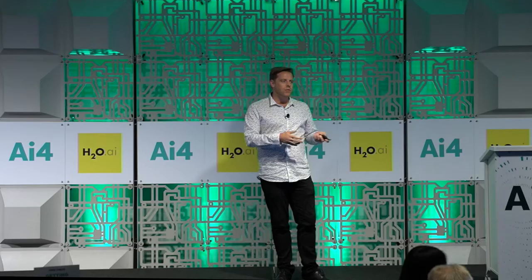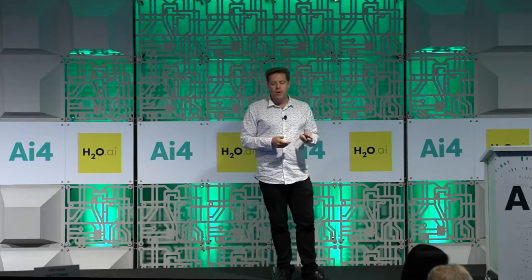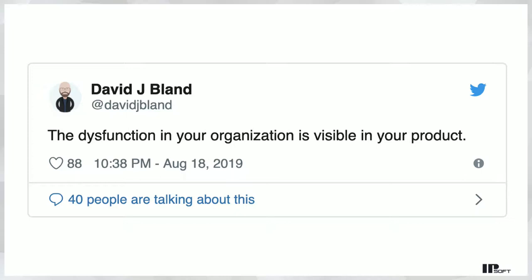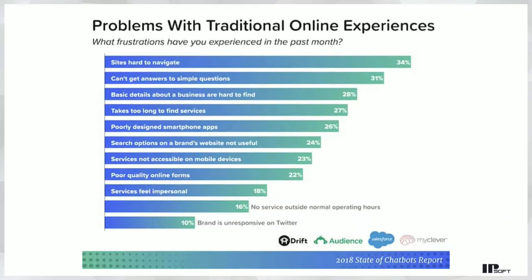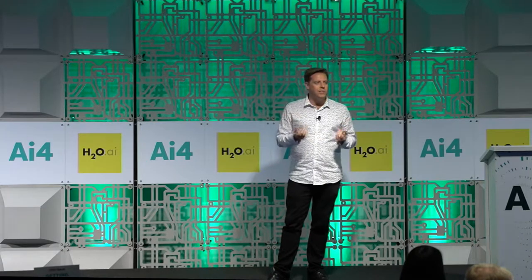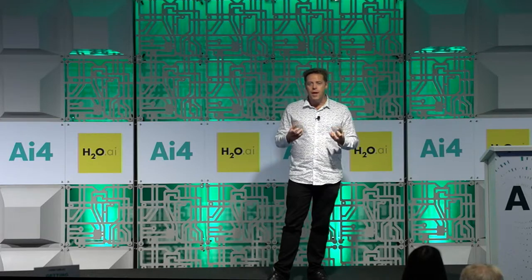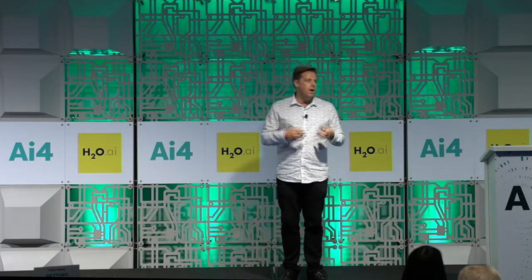The problem is something called Conway's Law — when you're building a product, your organizational structure is very apparent in that product. You're shipping your org chart whenever you ship a product. David Bland says it less politely: whatever dysfunction exists within your organization is actually what's in your product. A chatbot report from 2018 by SurveyMonkey and Salesforce found the top problems people had with online experiences were all related to shipping the org chart — how navigation is set up, not being able to get answers to simple questions, basic business details being hard to find — all because different internal organizations are vying for customer attention.